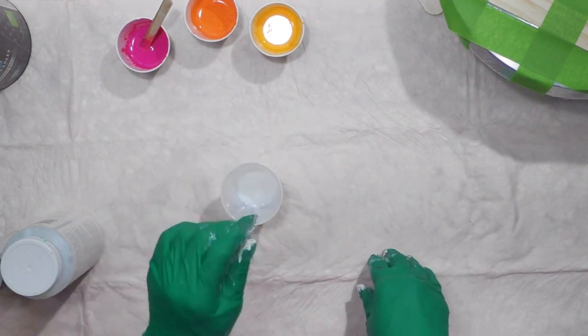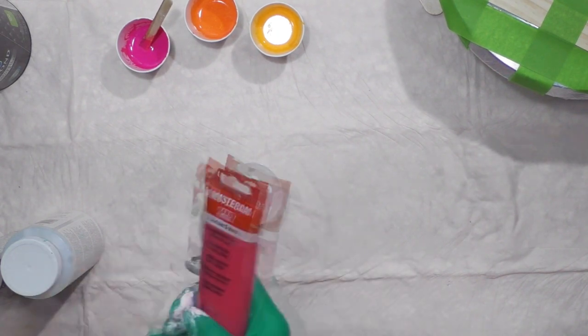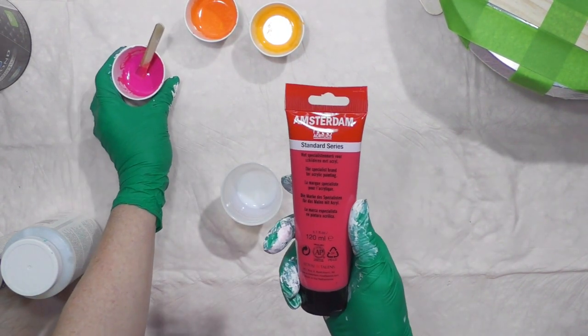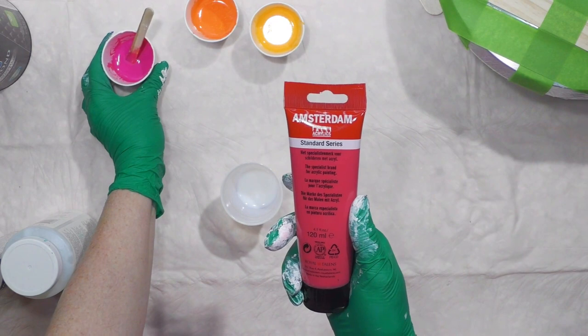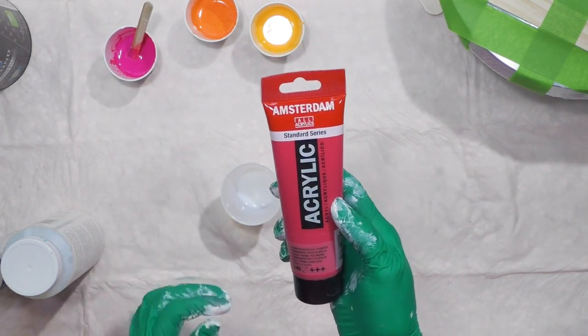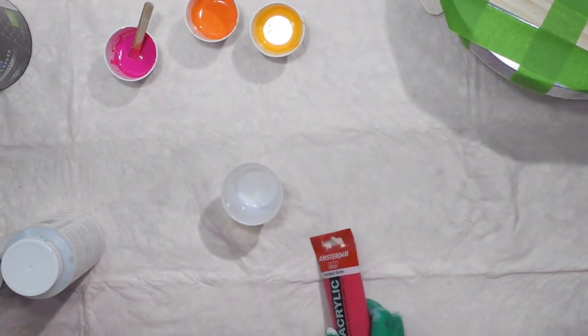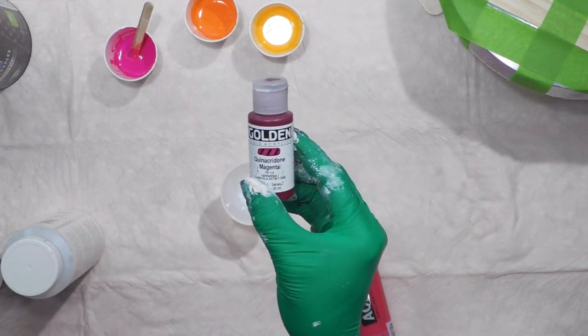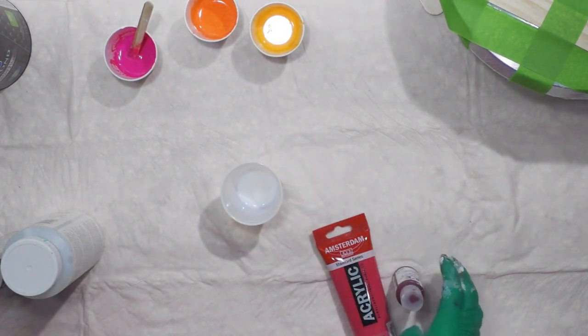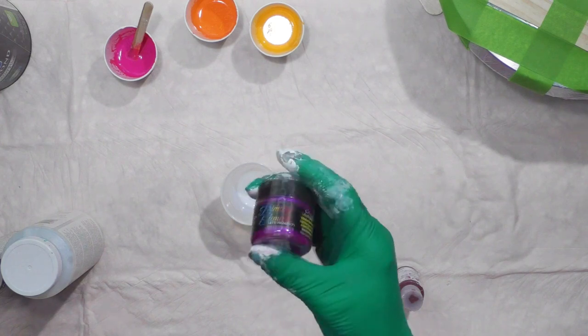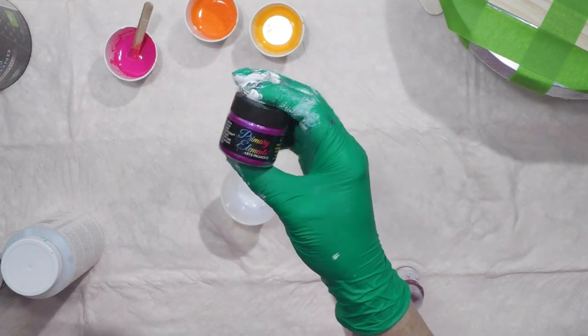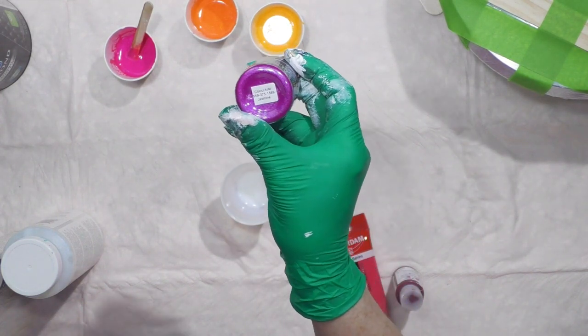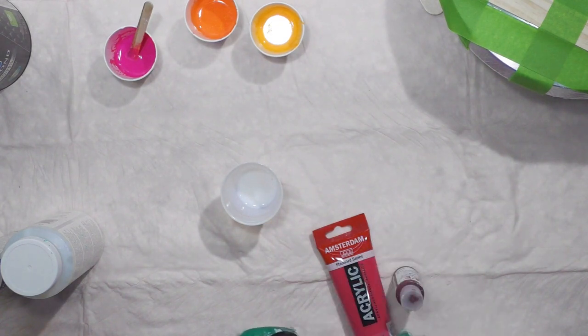And for my pretty color here, it is Amsterdam Permanent Red Purple with a drop or so of Quinacridone Magenta and some Interference Color Art Primary Elements Jasmine mixed in to give it some sparkle.